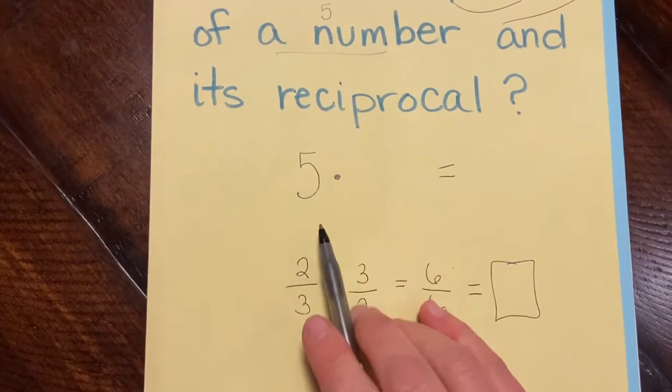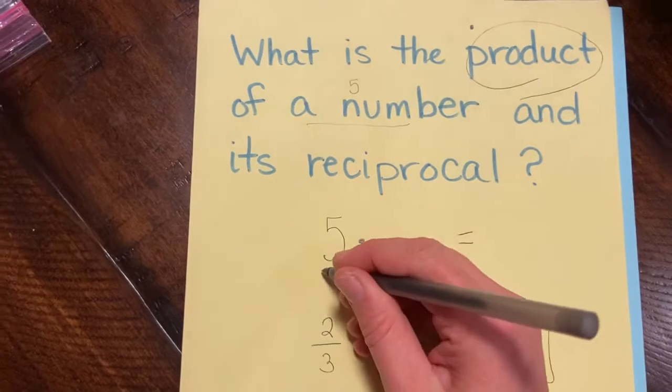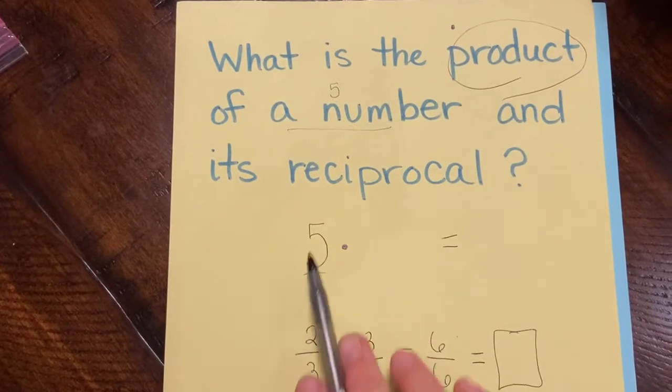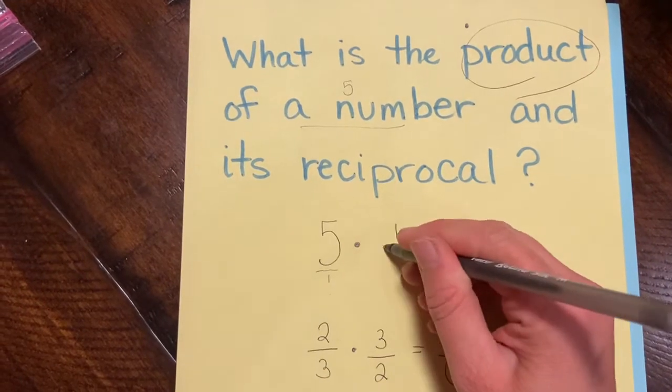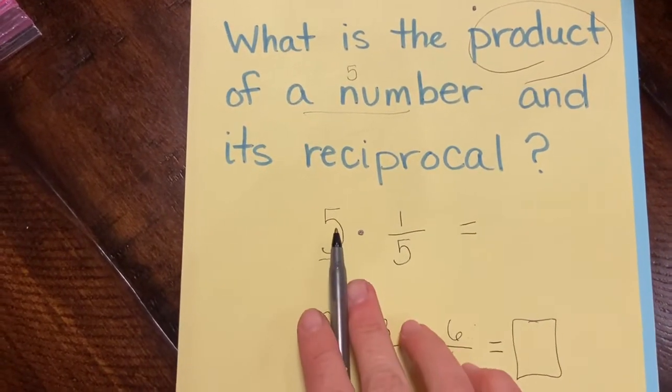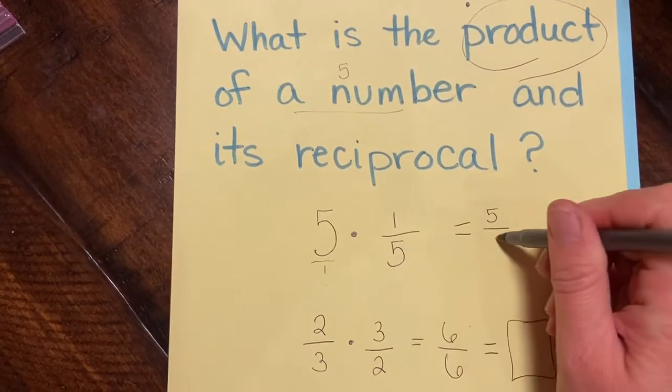So here I have a whole number. Well, we know every whole number has an invisible one underneath. So if I take the inverse of five, I get one-fifth. Multiply straight across. Five times one equals five. One times five equals five.